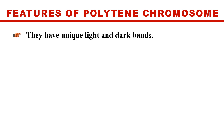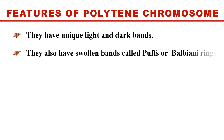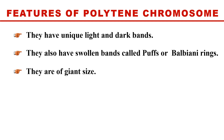The features of polytene chromosomes include: bands — these chromosomes have stripes called bands; puffs — when bands become swollen or expanded they are called puffs, also known as Balbiani rings, which are highly active sites of RNA synthesis; and giant size — these chromosomes are generally 200 times or more larger than normal chromosomes.